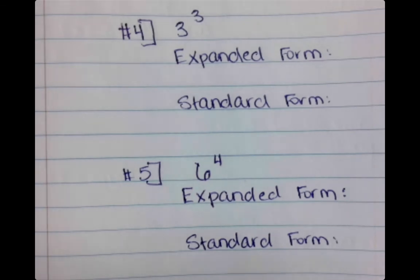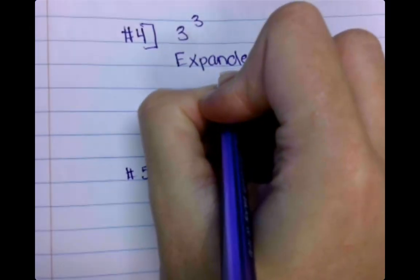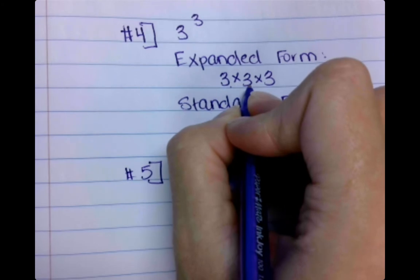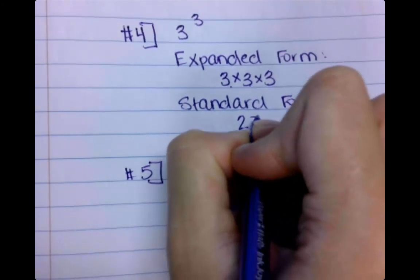Welcome back! For this, you should have had three times three times three. Three times three is nine, times three is twenty-seven.